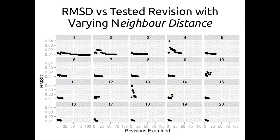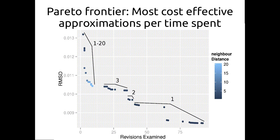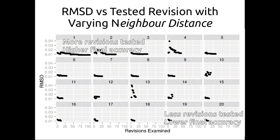We extracted those profiles and looked at RMSD versus test revision with varying neighbor distance. This plot shows 20 sub-plots, each a different neighbor distance. The top plot (distance 1) has many points; the bottom (distance 20) has very few. The x-axis shows how many tests we do — an online result. Neighbor distance of 1 takes a while to converge, while distances of 15 or greater converge very quickly. In general, more revisions tested yields higher final accuracy, and fewer revisions yields lower accuracy, but we can get pretty good results with fewer revisions tested.